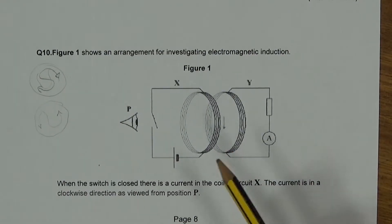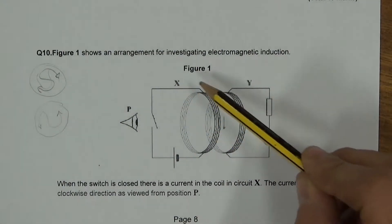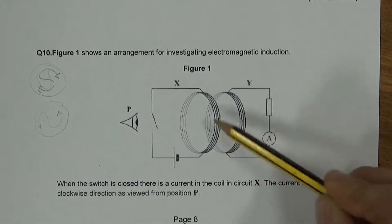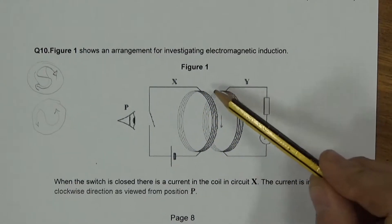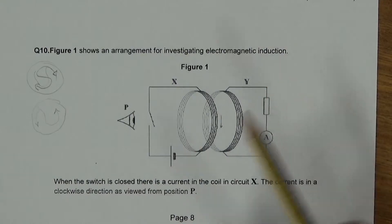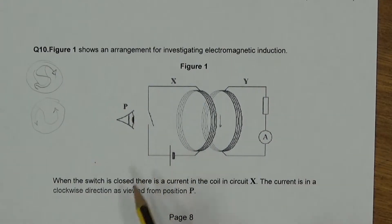Okay, so for this question it's showing a coil X that's not electrically linked but will be linked by flux to a coil Y. You're viewing it from observer P. It says when the switch is closed to the current in coil X, the current is in a clockwise direction as viewed from position P.